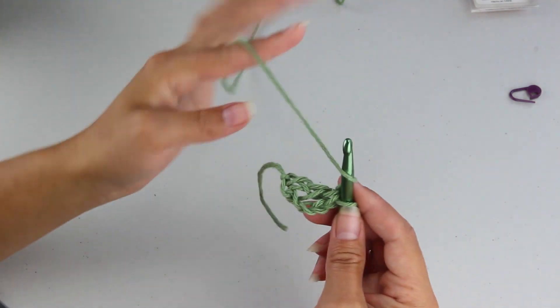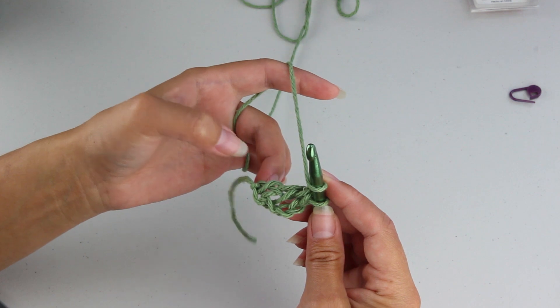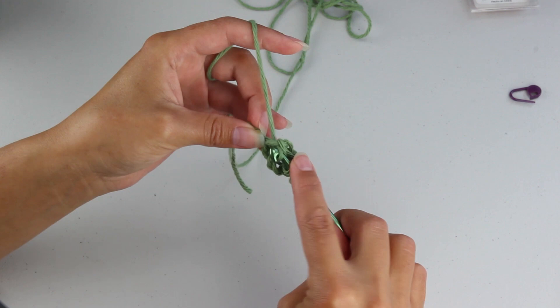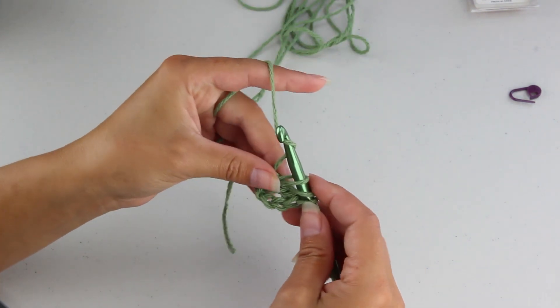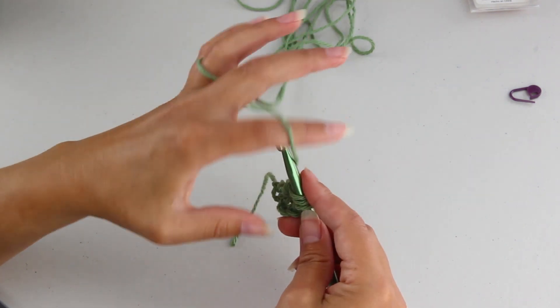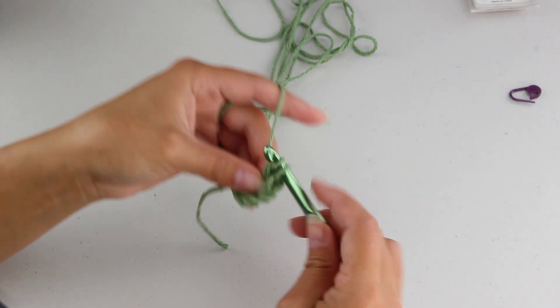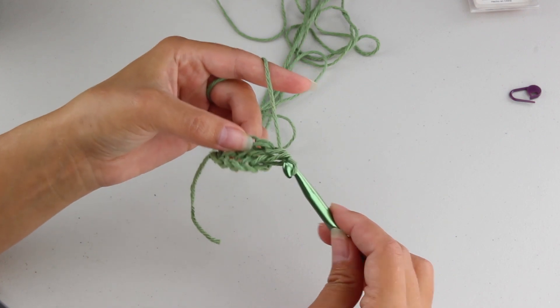Now we're going to yarn over and into the bottom of this stitch. We're going to insert our hook. We're going to yarn over and pull through. Yarn over, pull through one loop on your hook. Yarn over, pull through two loops. Yarn over, pull through the remaining two loops.